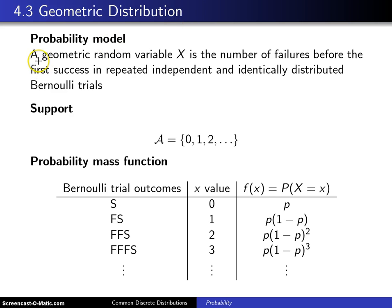Here is the setup for the geometric distribution. A geometric random variable x is the number of failures before the first success in repeated, independent, and identically distributed Bernoulli trials, each of which has probability of success p.